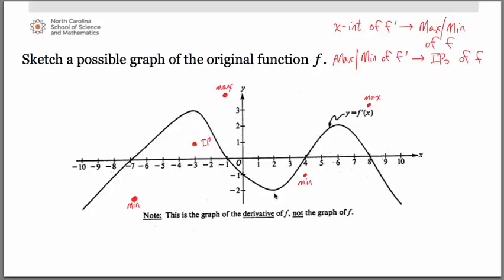We have another minimum on the derivative graph at approximately 2, so that gives us an inflection point at x equals 2 on the original. I had a maximum at negative 1 and a minimum at 4, so the inflection point at 2 goes about halfway in between vertically. And we have one last inflection point at x equals 6, located between the minimum at x equals 4 and the maximum at x equals 8.